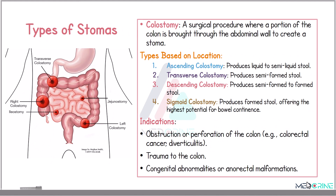There are three types of stomas. When looking at the types of stomas, we have a colostomy. A colostomy is a surgical procedure where a portion of the colon is brought through the abdominal wall to create a stoma. There are three types of colostomies based on location: an ascending colostomy, a transverse colostomy, a descending colostomy, and a sigmoid colostomy.